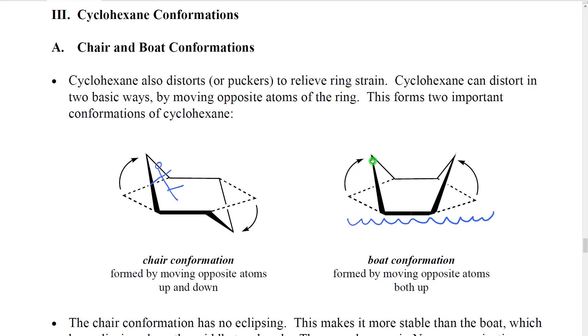In theory, the two ends could also move in the same direction or both up, for example, toward each other. That would create a structure which would look like this, sort of a U-shape or a tub-shaped structure that scientists called the boat conformation. So we have the chair and the boat. Here's the water for the boat.